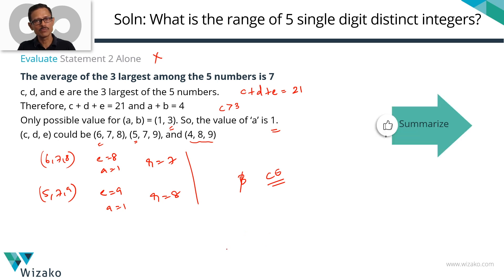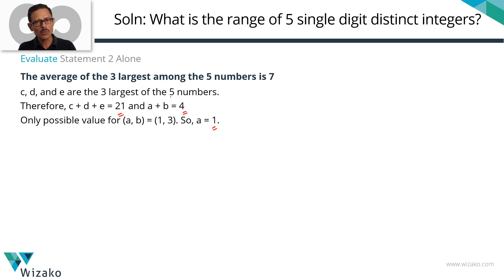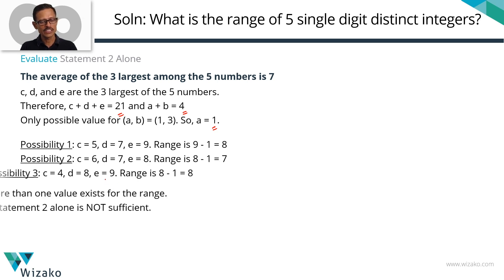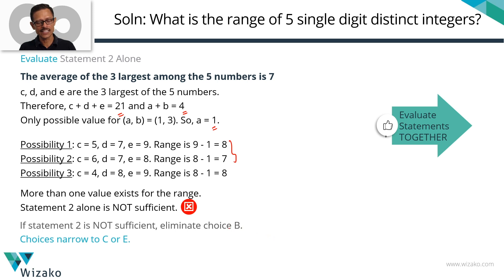Let's evaluate both statements together. From statement 2, we deduced that a + b = 4, giving a unique value of a = 1. From statement 1, we know that c = 6. So we know a = 1 and c = 6.